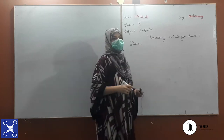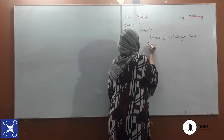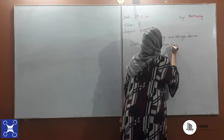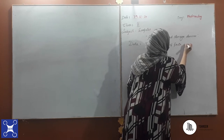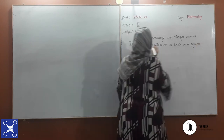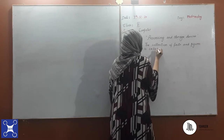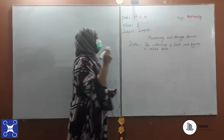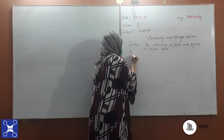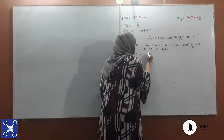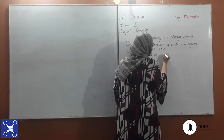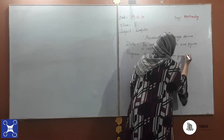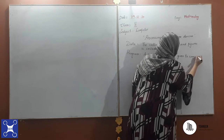Instructions are given to the computer in the form of data. The definition of data — I'm just writing it here so you may not find any difficulty — is the collection of facts and figures, which is called data. And program — what do you mean by program? A program is a set of instructions given to a computer to perform a certain task.